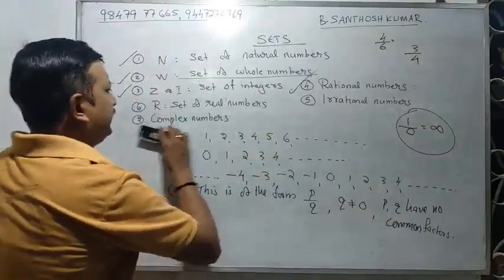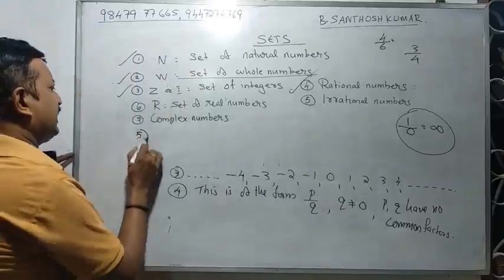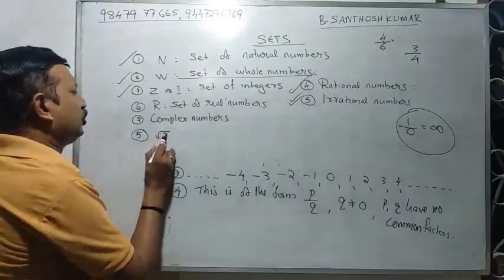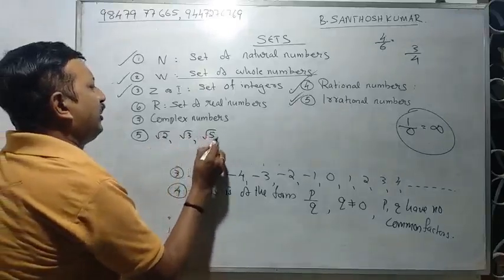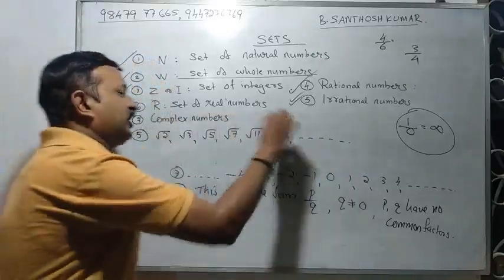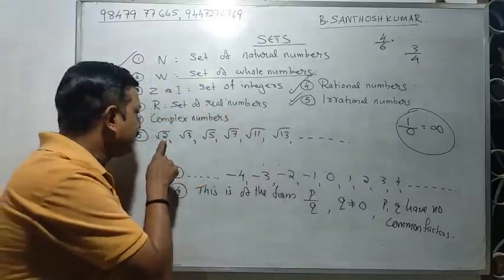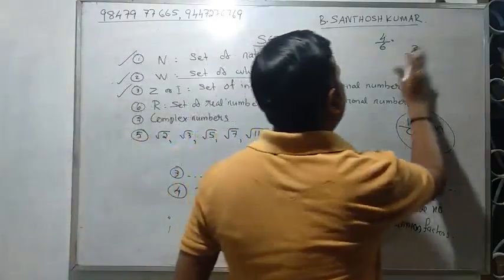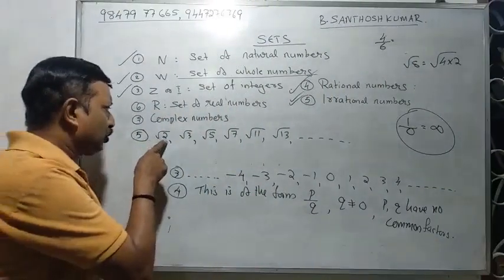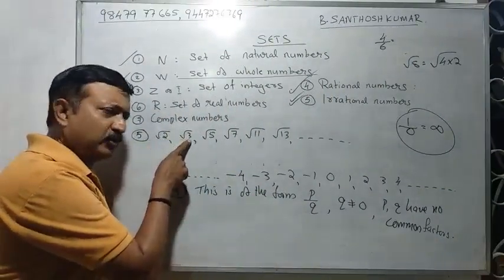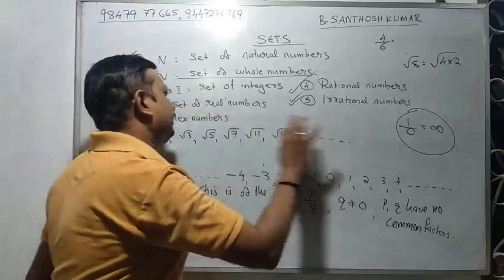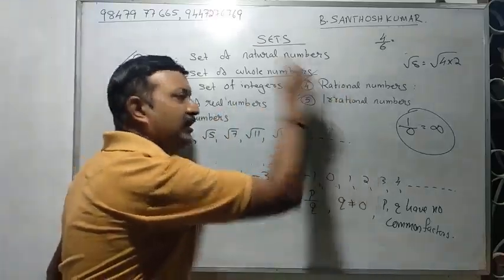Irrational numbers — irrational numbers include numbers like root 5 and other square roots that cannot be expressed as p by q.